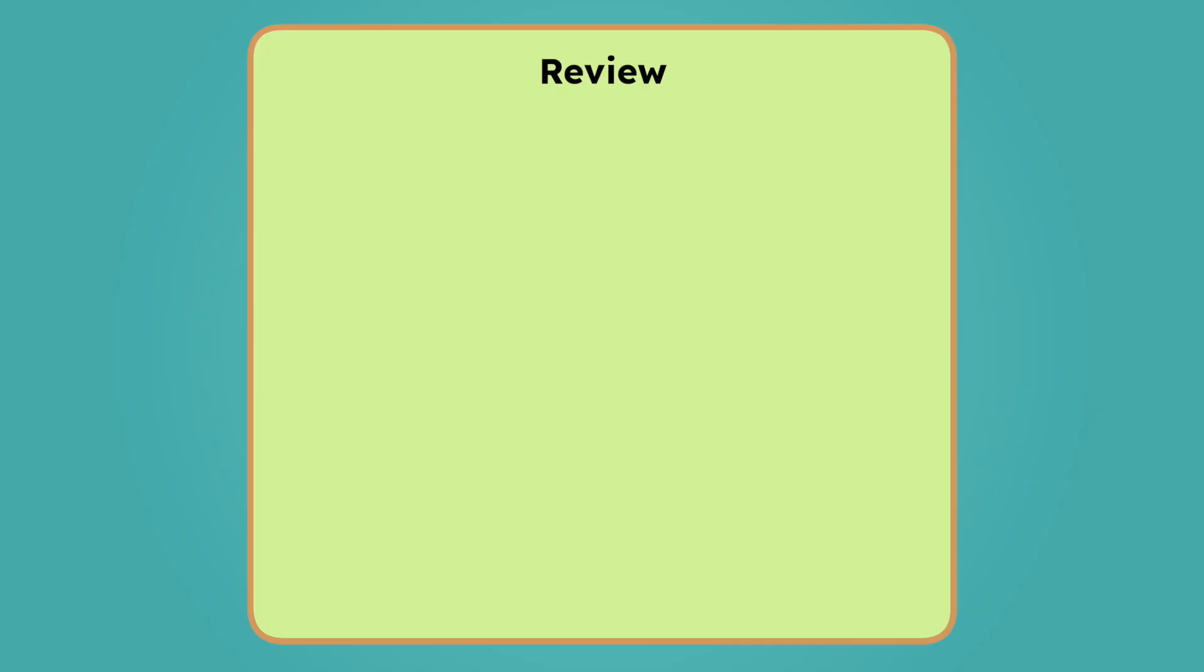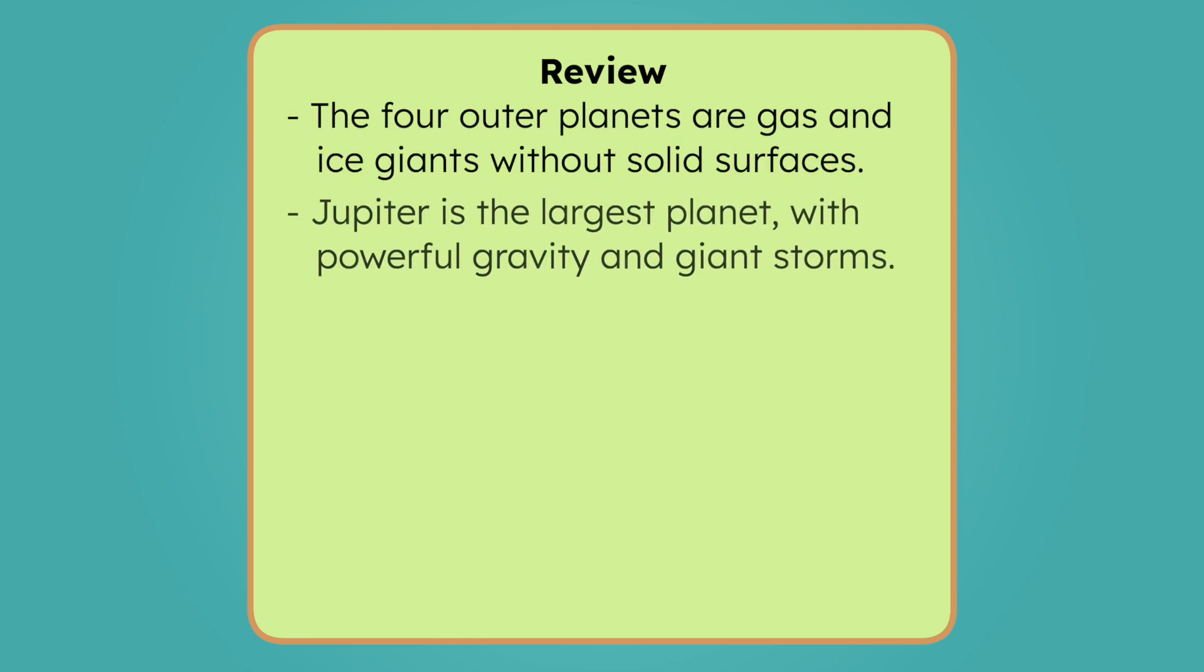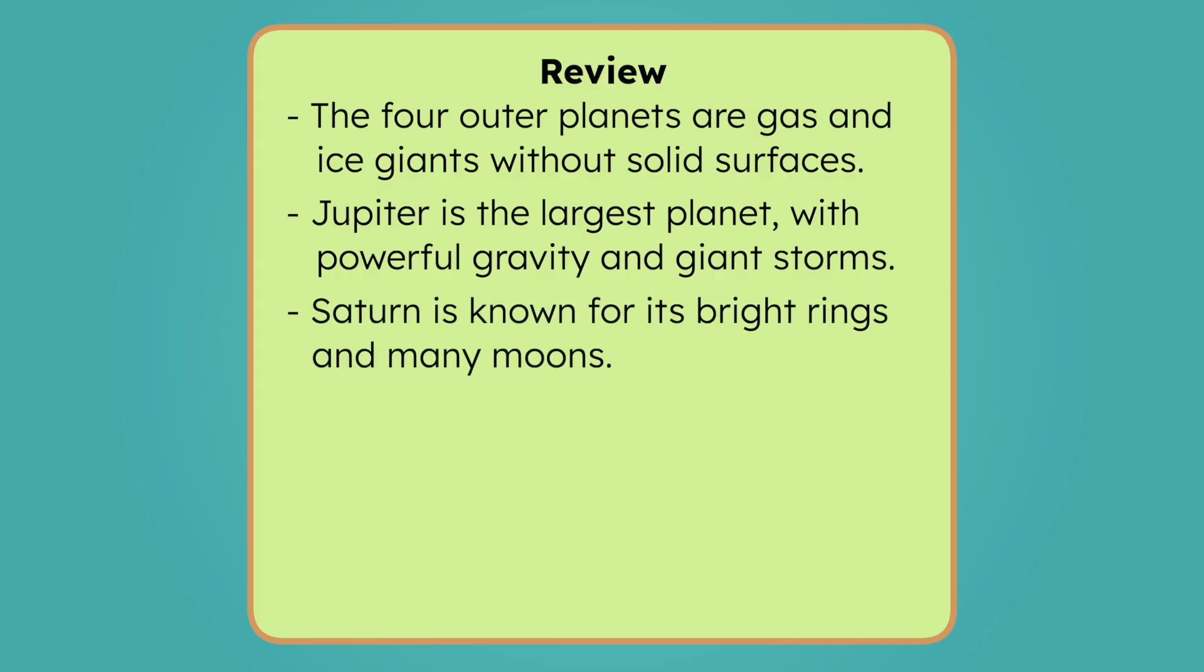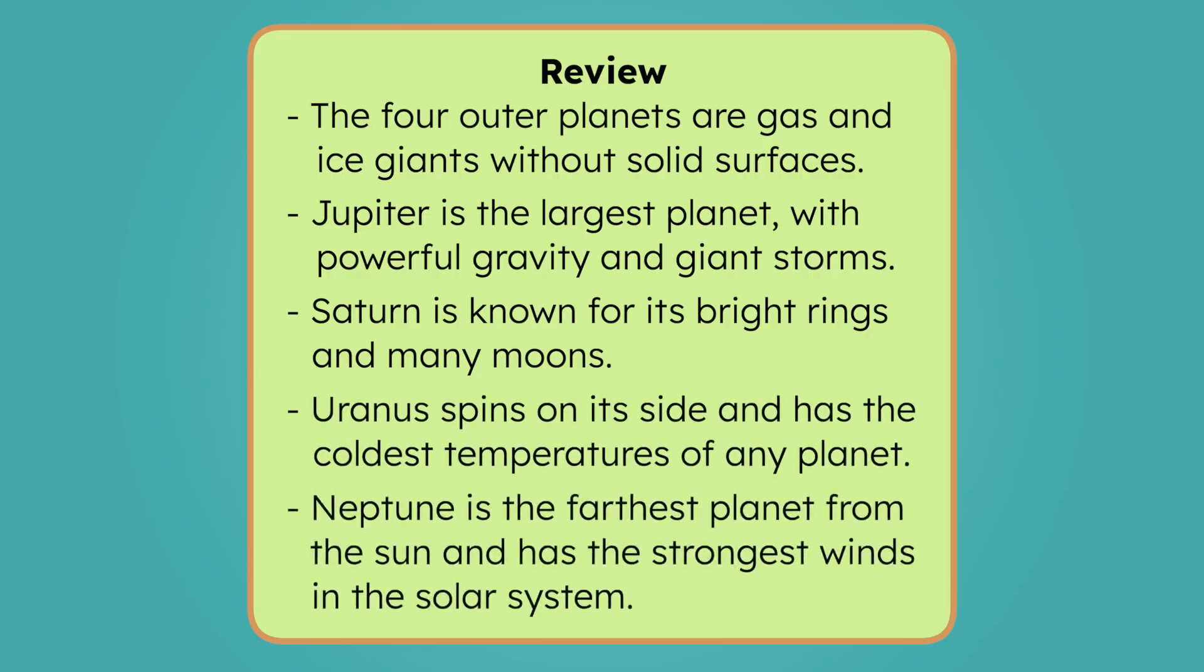That wraps up our journey through the solar system. But before we head home, let's review everything we've learned today. The four outer planets are gas and ice giants without solid surfaces. Jupiter is the largest planet with powerful gravity and giant storms. Saturn is known for its bright rings and all its moons. Uranus spins on its side and has the coldest temperatures of any planet. And Neptune is the farthest planet from the sun and has the strongest winds in the solar system.